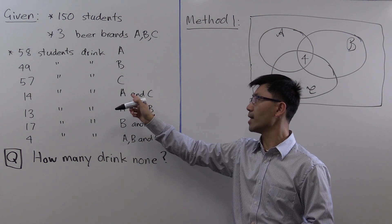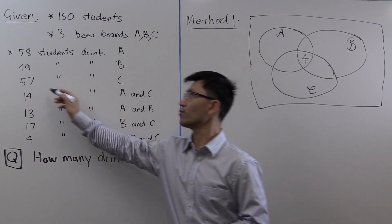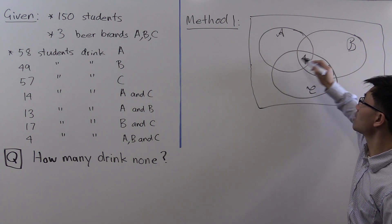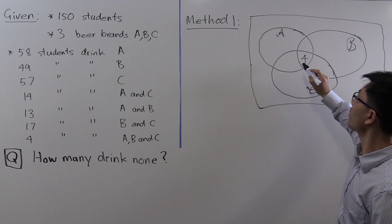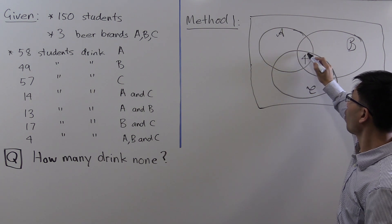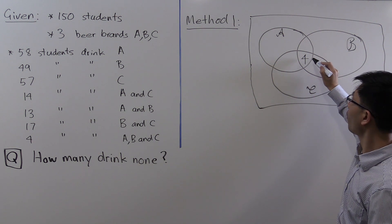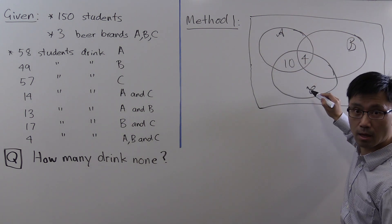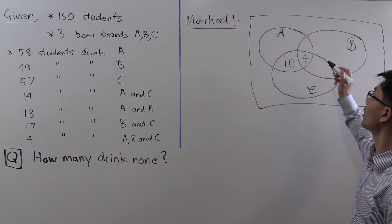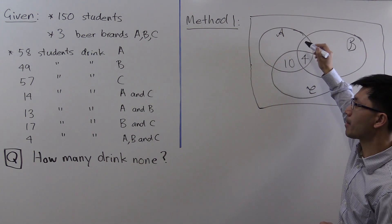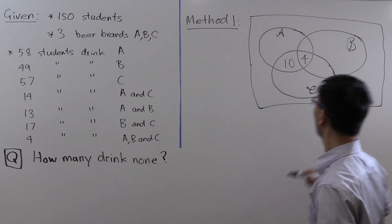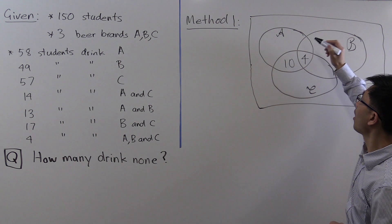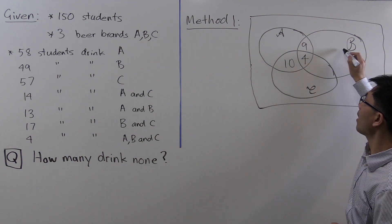Now suppose you drink brands A and C — you're one of these 14 students. Of those 14, 4 also drink brand B, so 14 minus 4 equals 10 drink A and C but not B. Similarly, for those that drink A and B, there are 13 such students. Of those 13, 4 also drink C, so 13 minus 4 equals 9 drink A and B but not C.